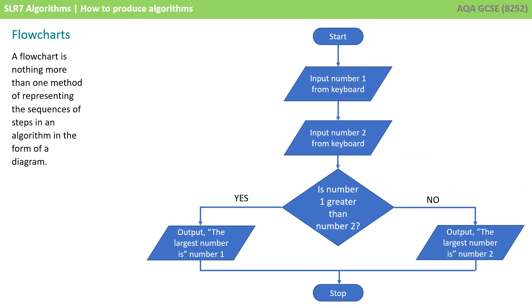A flow diagram, often referred to as a flowchart, is just one way of representing a sequence of steps in an algorithm. Here we can see that we start at the top.